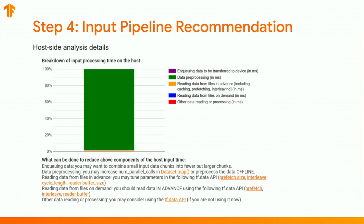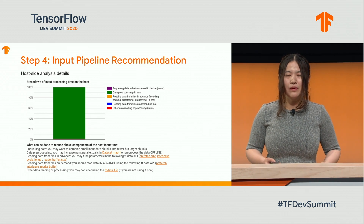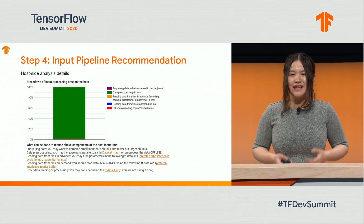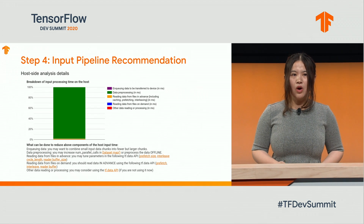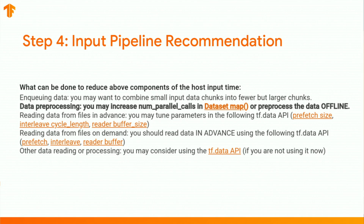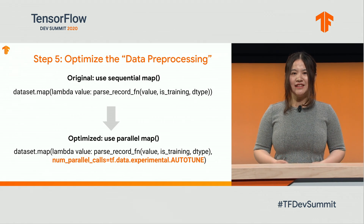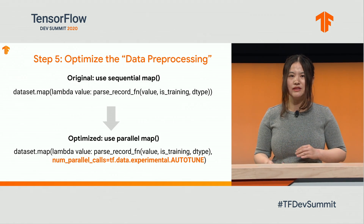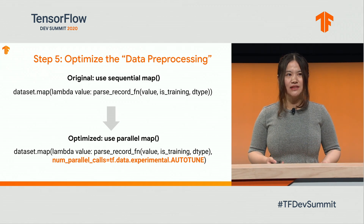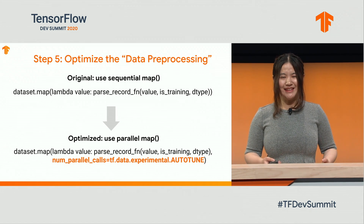Let's follow this recommendation and check out the Input Pipeline Analyzer tool. This is the host analysis breakdown provided by the tool — it automatically detects that the most time is spent on data pre-processing. Our tool tells you what can be done next to reduce data pre-processing time. It recommends you increase the number of parallel calls in the dataset map or process data offline. If you follow the link on the dataset map, you will see how to do that. According to the guide, we changed the sequential map to use parallel calls, and we should also try the convenient auto-tune option, which will tune the value dynamically at runtime.